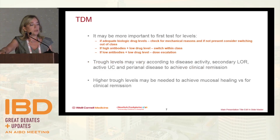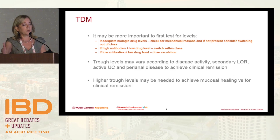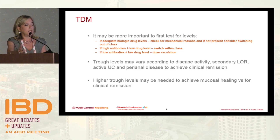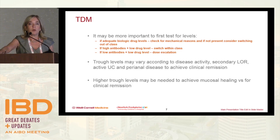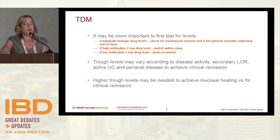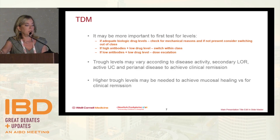It may be important to do this at the very beginning. If you started a biologic on a patient and they're not doing well, you want to know: is it really because the drug is not working, or could there be something else — maybe another immune pathway? You look for high antibodies, low drug levels, or low antibodies and low drug levels, which would tell you that you need dose escalation. Trough levels may also be important to assess secondary loss of response. In those with perianal disease, drug levels probably need to be higher. Early data showed better responses with higher drug levels and no antibodies.